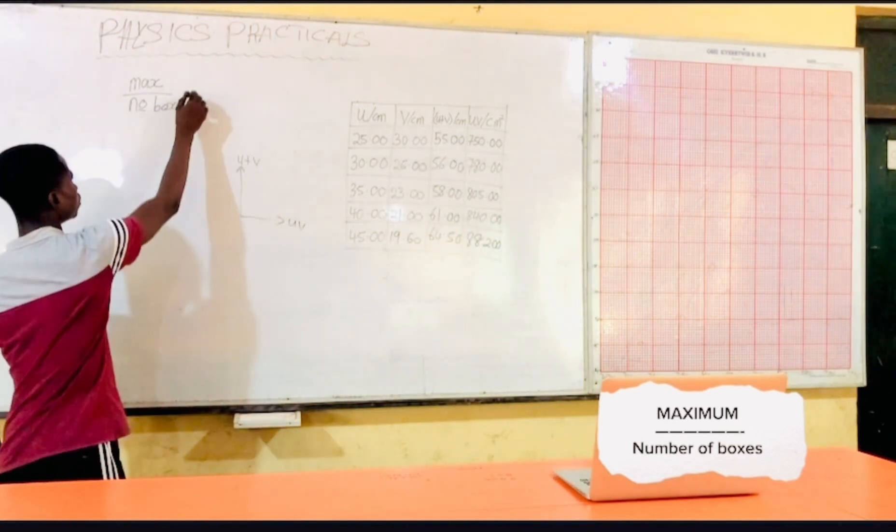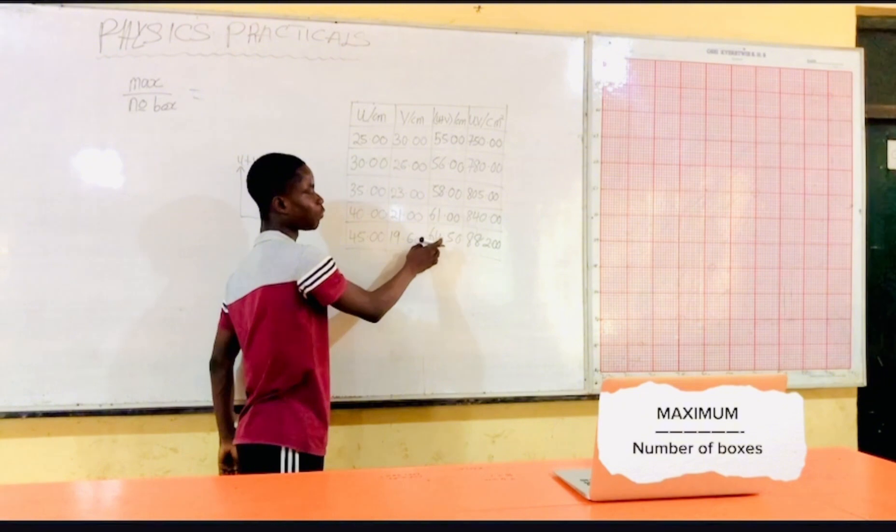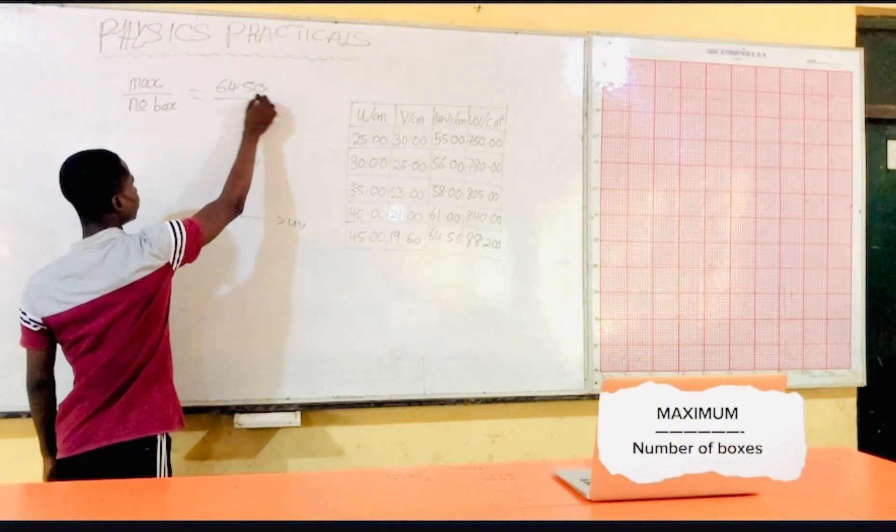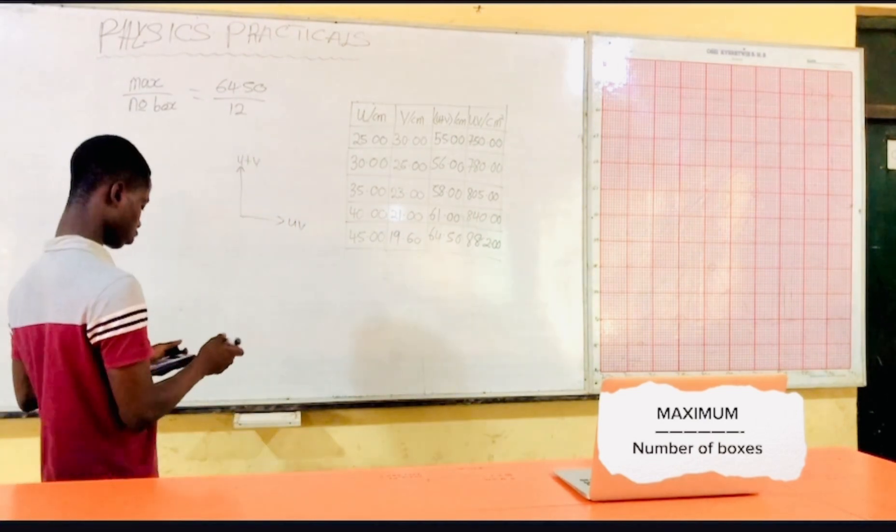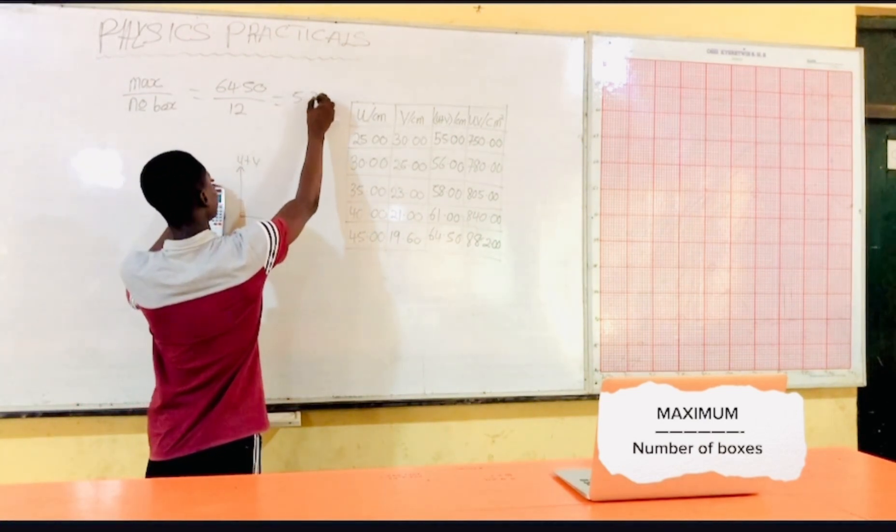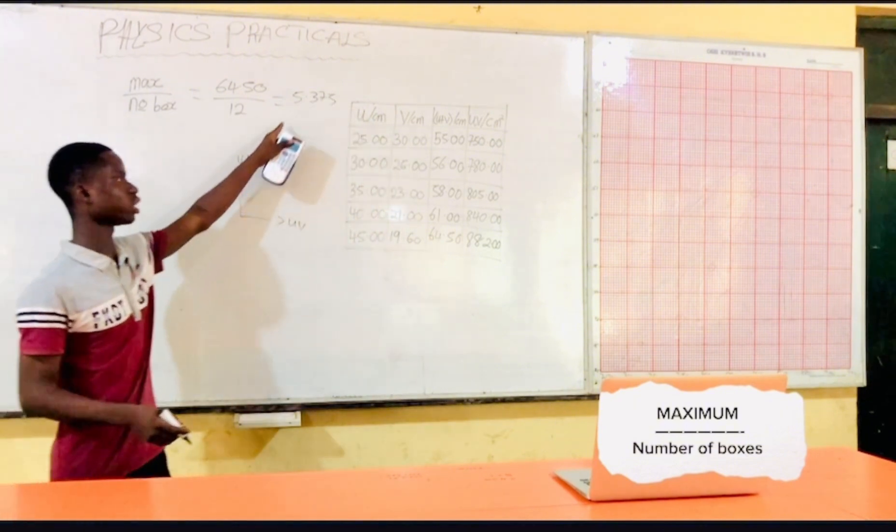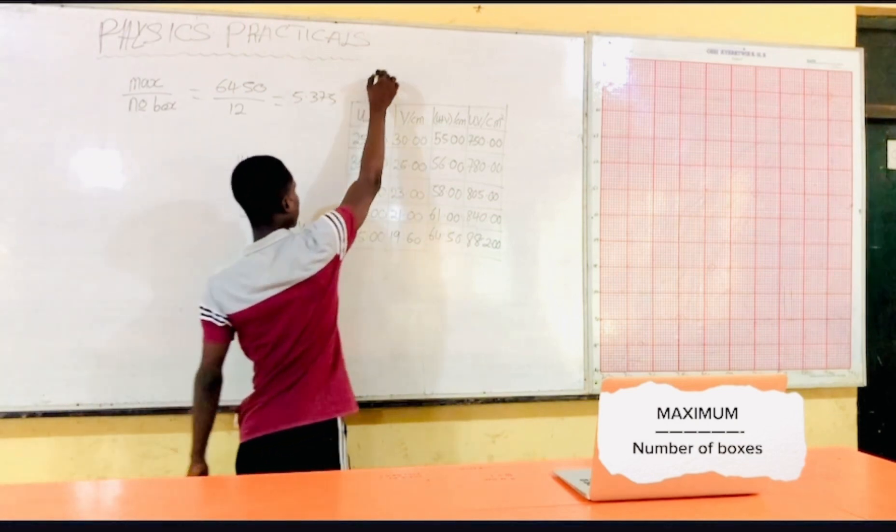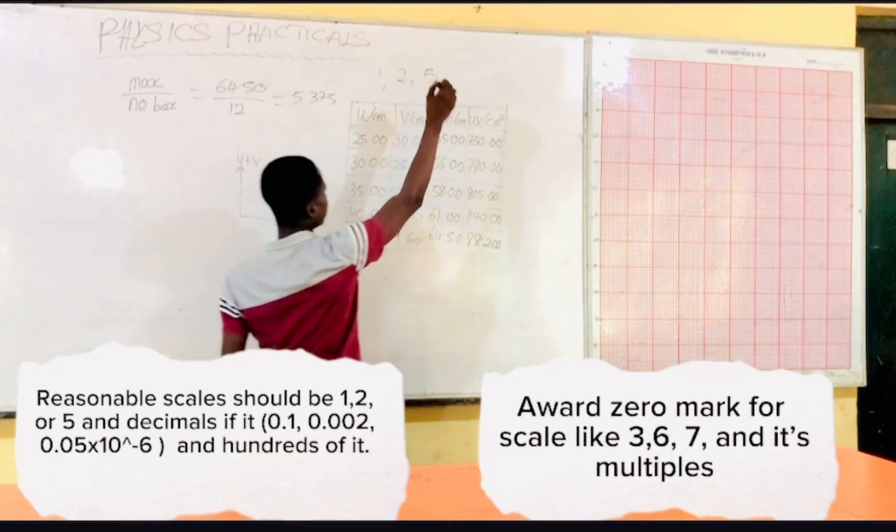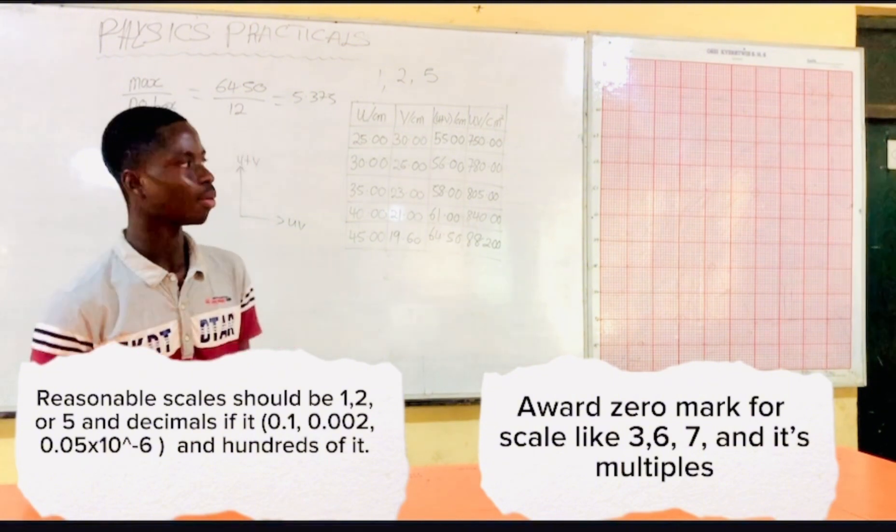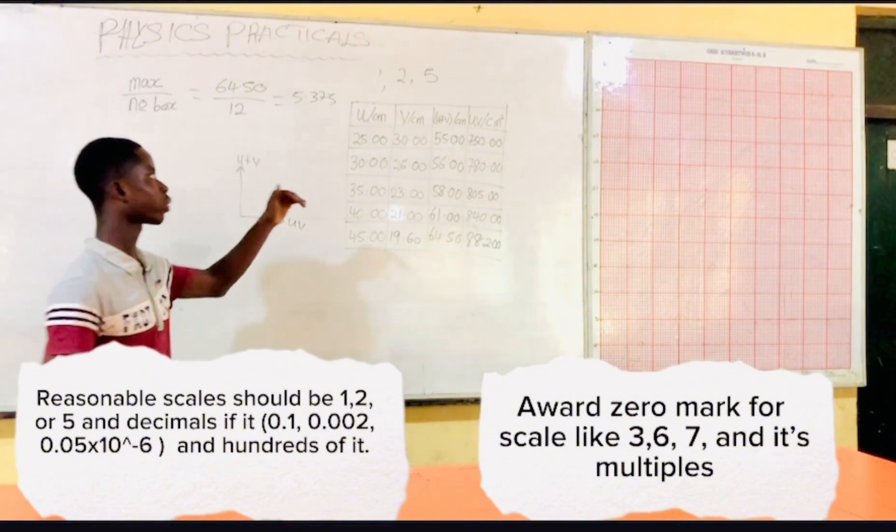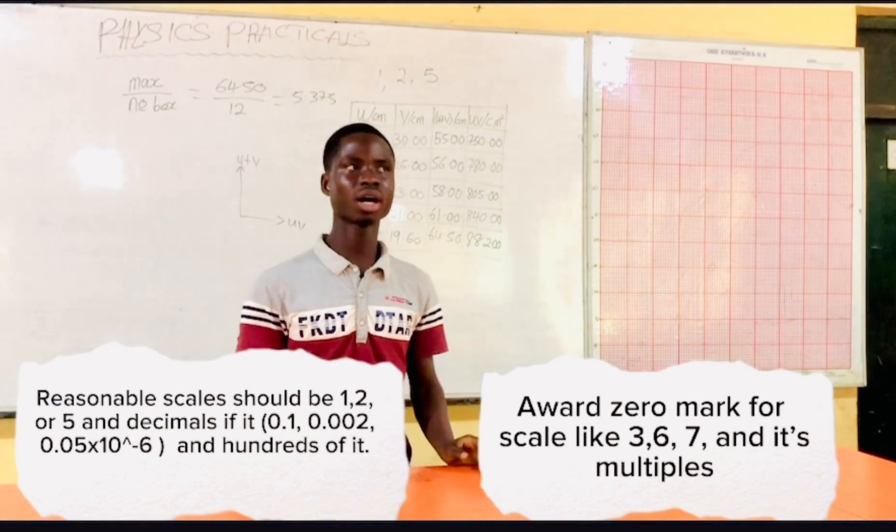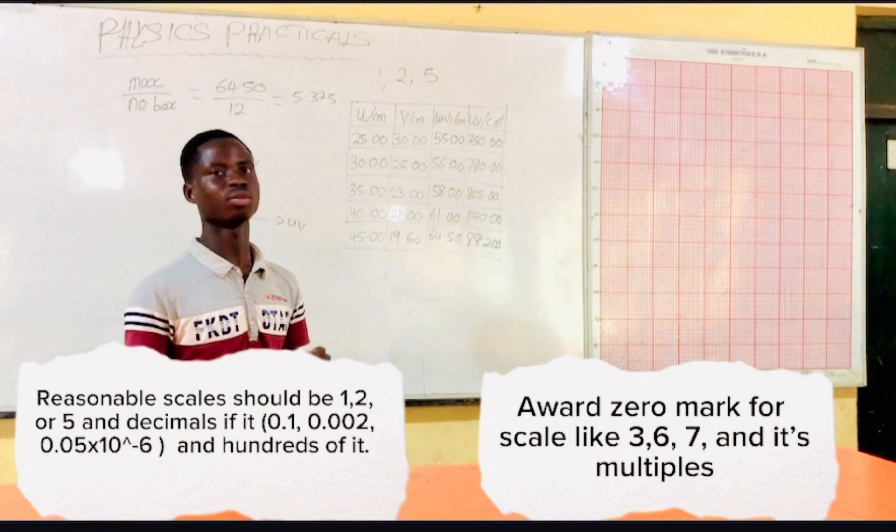We take our maximum value, which is 64.50. Our maximum value is 64.5. We divide it by our 12 boxes. We have 5.375. This is not a reasonable scale for plotting your graph. The reasonable scale, in physics, we have 1, 2, and 5. These values are much, much, much more reasonable. Like if you work with a scale of 1 or 2 or 5, it is much, much, much more accurate than using other values.